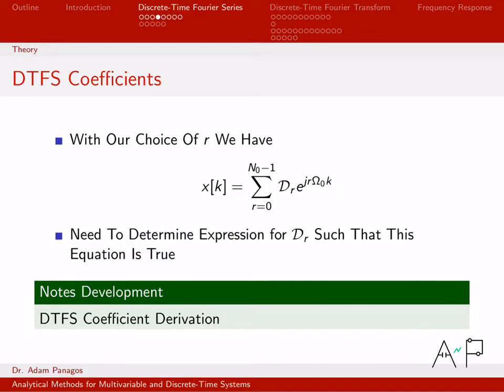All right, so in this video we're going to come up with an equation for the discrete time Fourier series coefficients. In the previous video, this was the equation that we came up with for the discrete time Fourier series representation of the periodic signal x[k]. What we would like to do now is kind of flip this equation around. As written, it's x[k] equals a function of Dr, where Dr are the coefficients we want. I would like to isolate Dr and be able to write an equation Dr equals a function of x[k], so I can actually compute the coefficients.